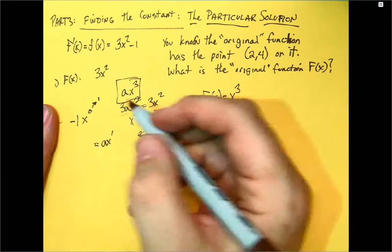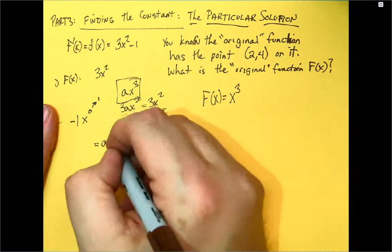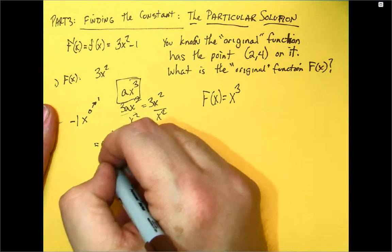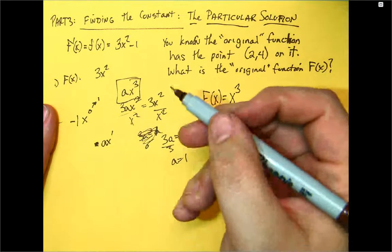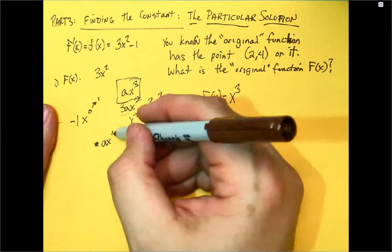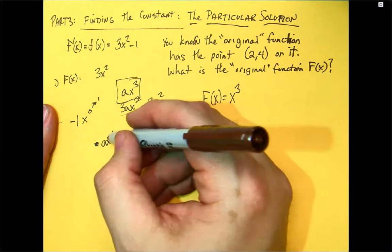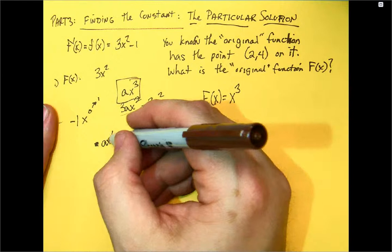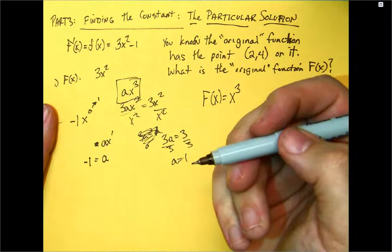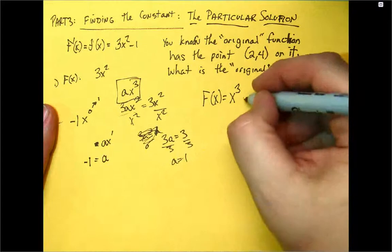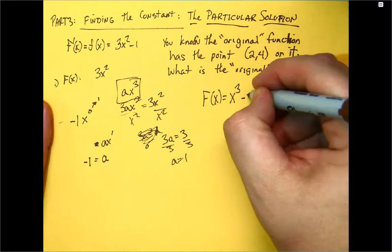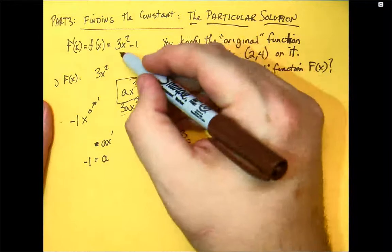So if I have ax to the first power, and I take its derivative, well, what's the derivative of ax to the first power? That's just going to be a. So a should be equal to negative 1 because that's the number that's there. So I know that this is going to be negative 1 times x. So negative x. So I took care of this guy. I took care of this guy.